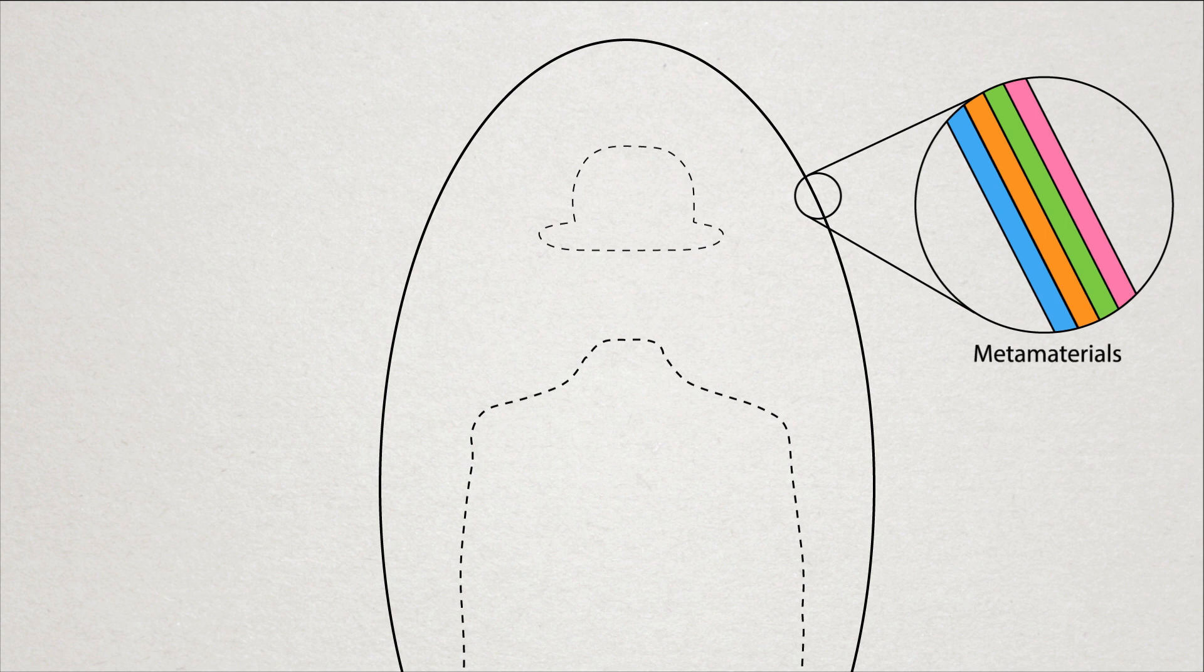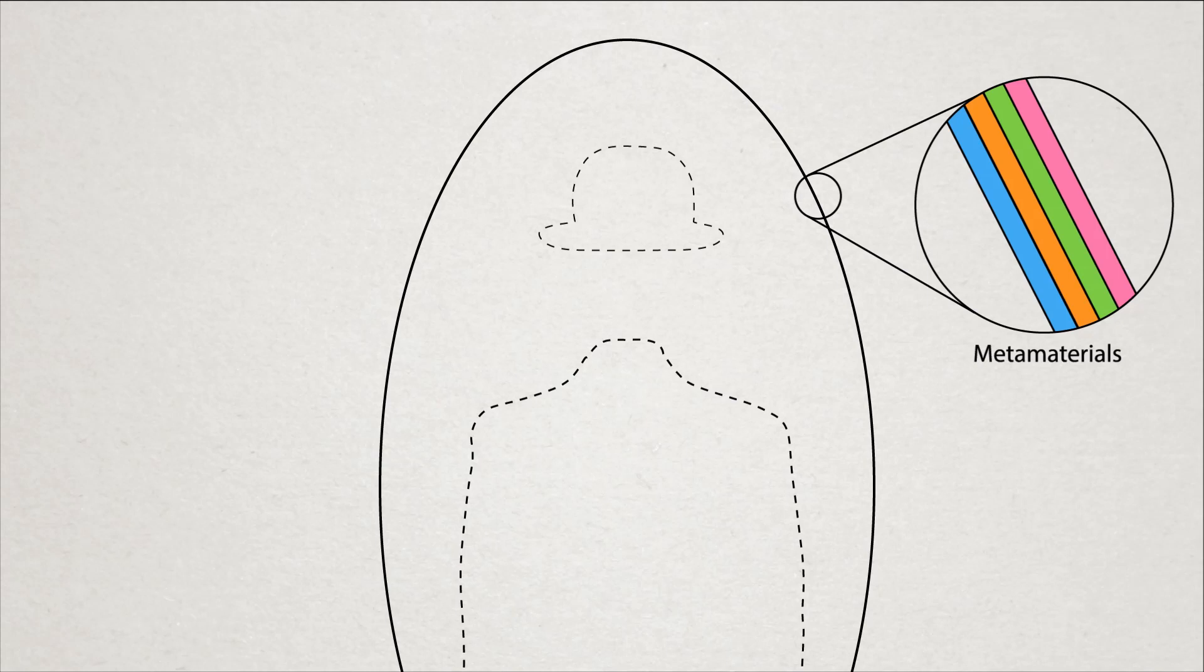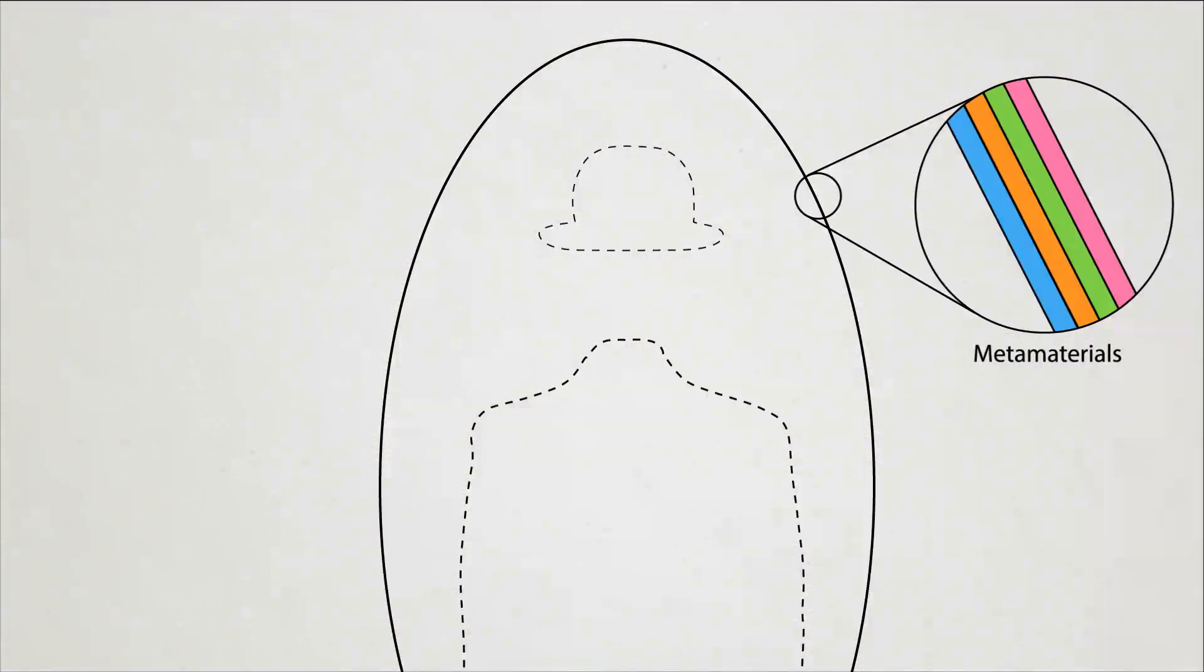But research in this field isn't all about invisibility cloaks and shields for remaining unseen by eye. So let's look at why we would even want to be able to be invisible, and then how scientists are already achieving this for magnetic fields.